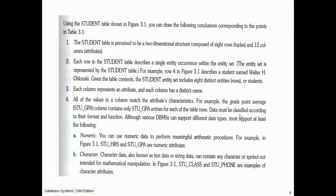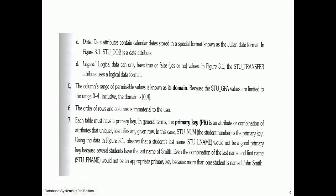Each column represents an attribute and has a distinct name. All values in a column match the attribute's characteristics — for example, the GPA column contains only numeric entries. Data must be classified by format and function. Most database management systems support at least numeric, character, date, and logical (true/false) data types. The domain of a column is its range of permissible values — for example, GPA values are limited to the range 0 to 4.